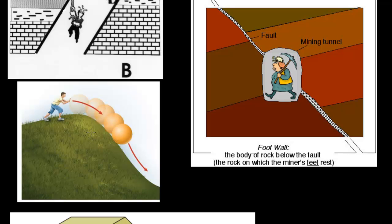If we think about the same thing in our diagram, this would be the foot wall and this would be the hanging wall. If you think about the hanging wall like a ball, it's normal motion for it to go downhill. This is the terminology we'll use for faults: hanging wall moving down is normal motion; hanging wall moving up is abnormal — the reverse of normal.